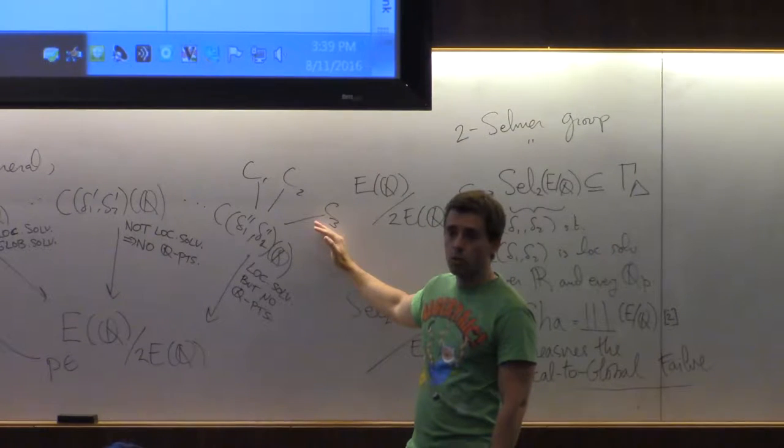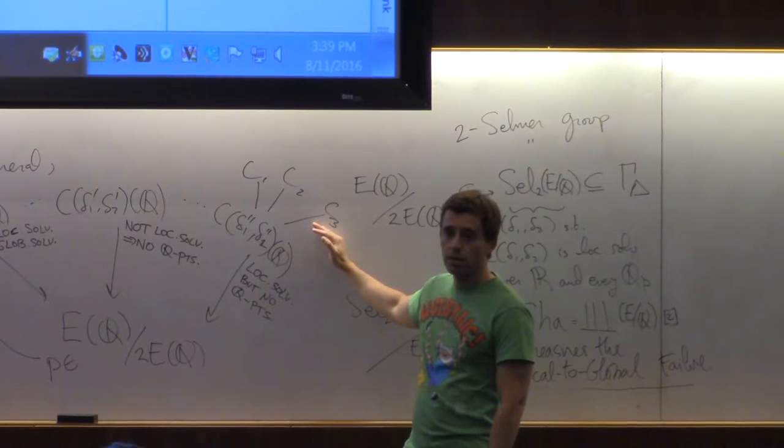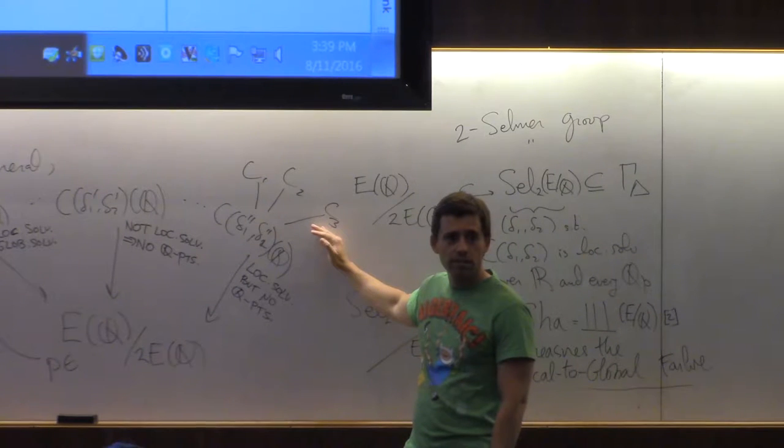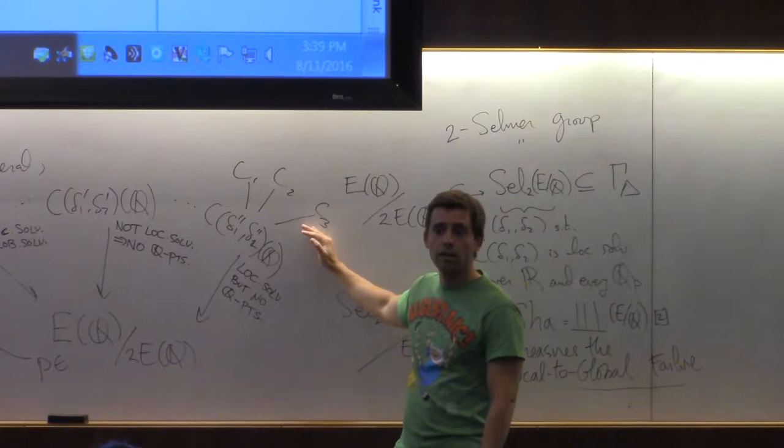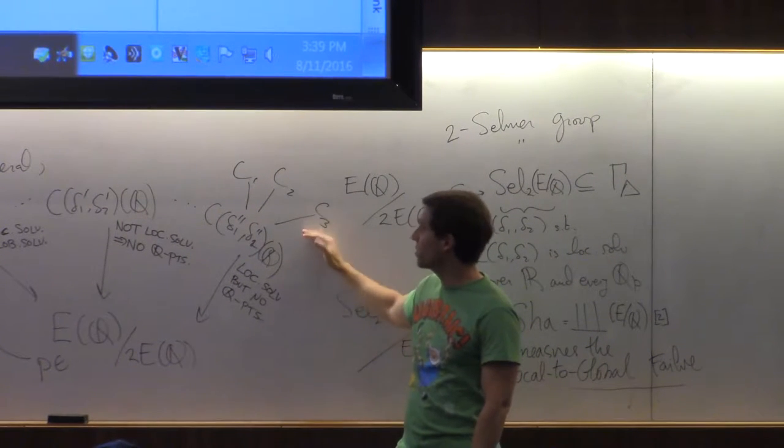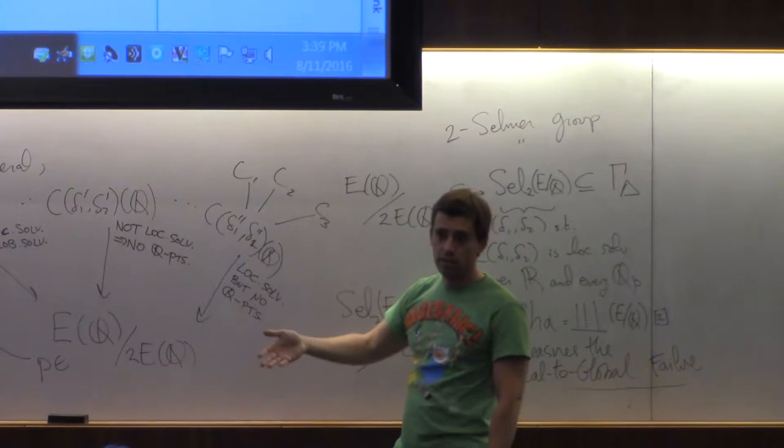These ones are already quite tricky and I think Magma can do four descents. Can you do eight descents at this point? So Magma has implemented two descents, four descents, and then eight descents and nothing else. There's no farther descent.